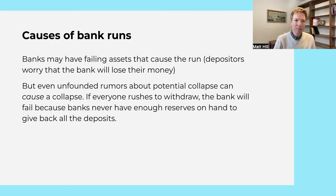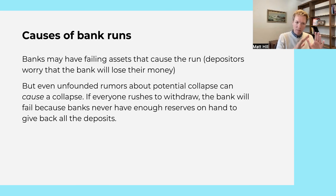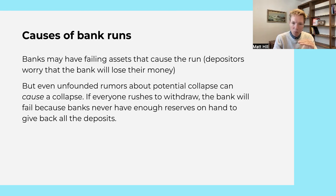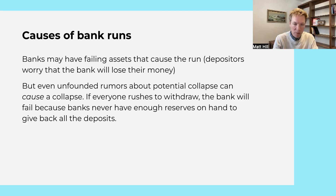So this is the banking system: fractional reserve banking, with interest rates at the core. Banks give you some interest on your deposits, charge people a higher interest rate when they loan your money out — that's how they make money. And because of how banks work, there is this fundamental risk: if everyone asks for their money back, we'll have a bank run and the bank will collapse.